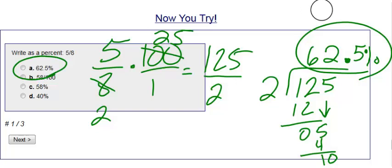So my answer is going to be 62.5%, which is choice A. Always multiply by 100 over 1, then simplify and divide.